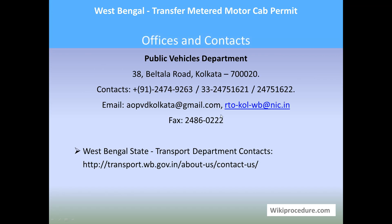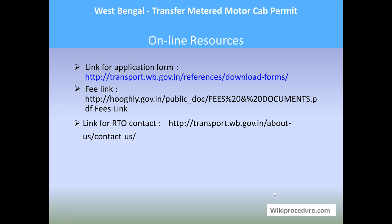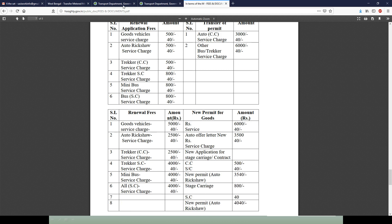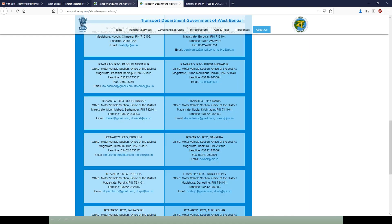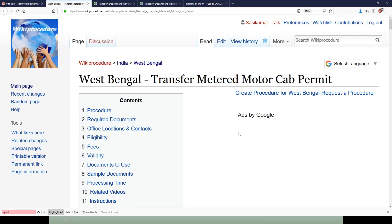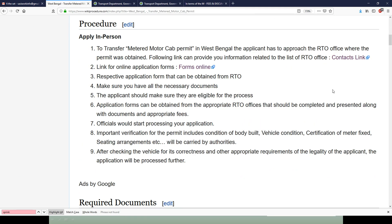Offices and contacts: Public Vehicles Department, 38 Beltala Road, Calcutta 20. Email and fax details are provided here. The contact link will also give access to the addresses of RTO offices — all this information will support the applicant in clarifying doubts and complaints. Online resources: the links provided here give direct access to the websites which have enough information and details for completing this procedure, provided to save your valuable time.